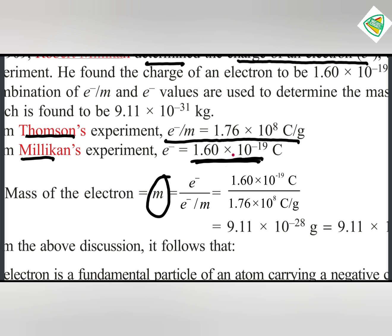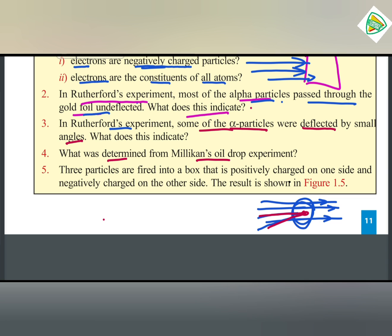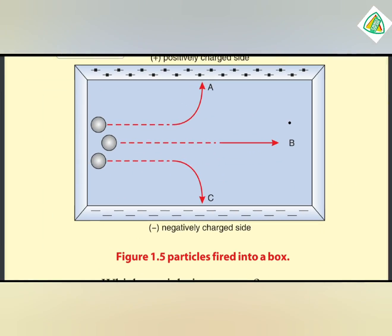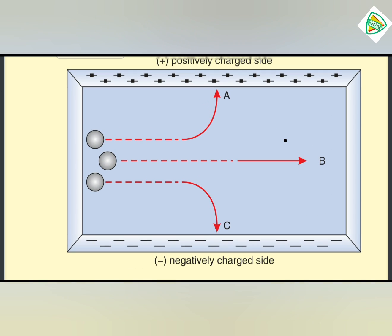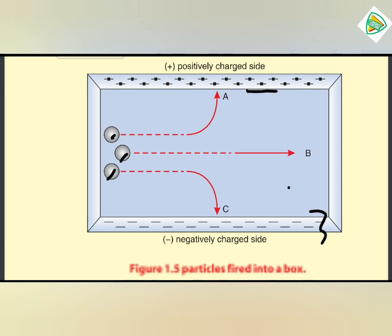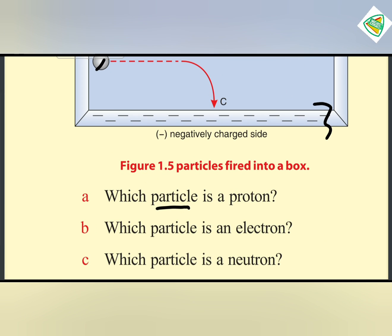3 particles are fired into a box. Which particle is which? Identifying protons, electrons, and neutrons based on their charge and behavior.